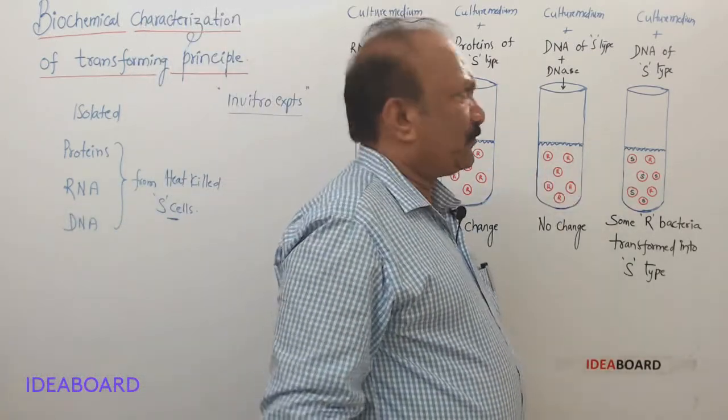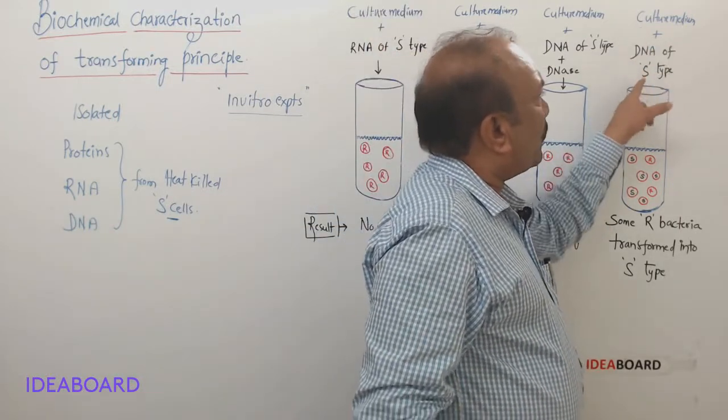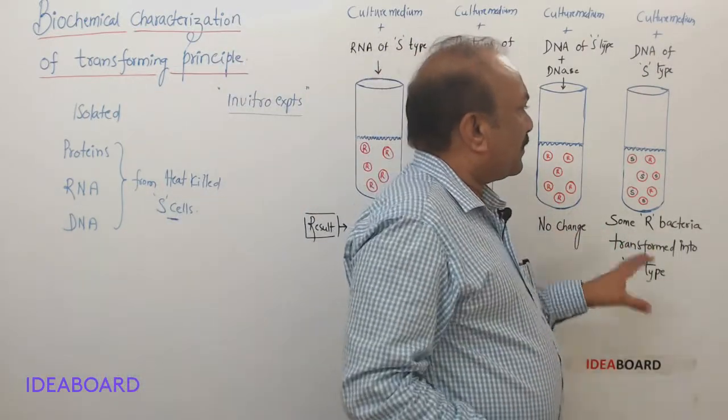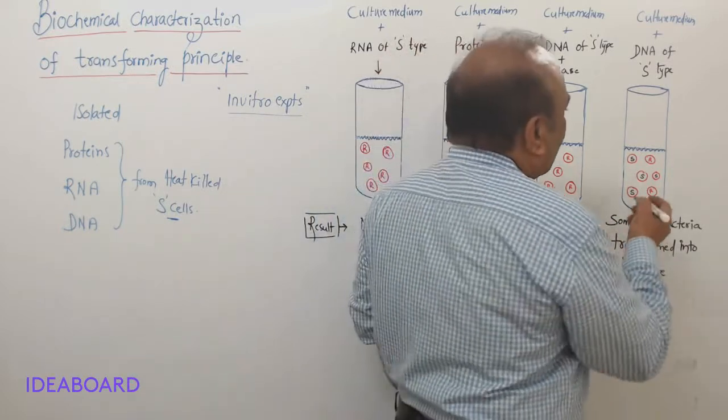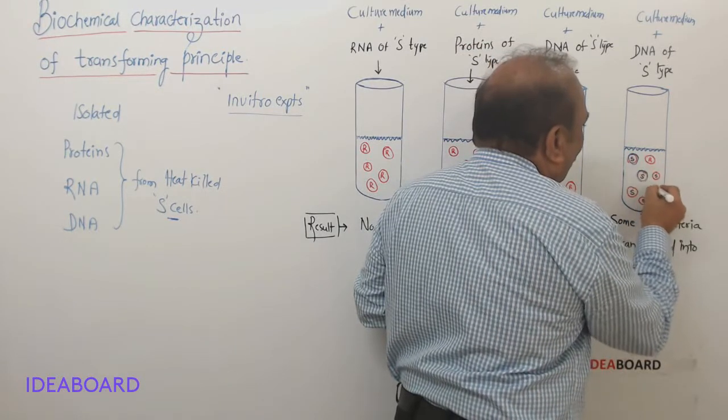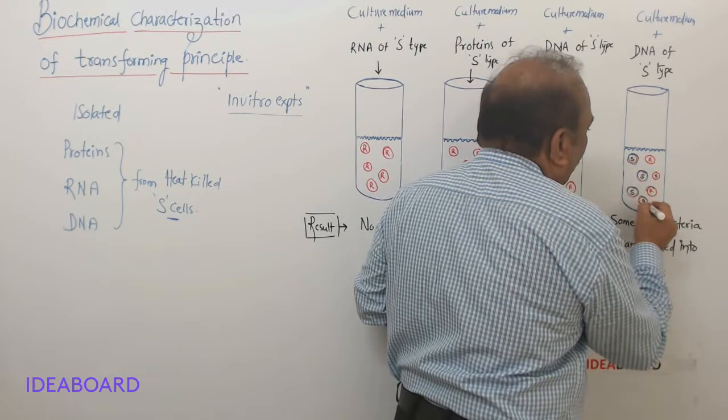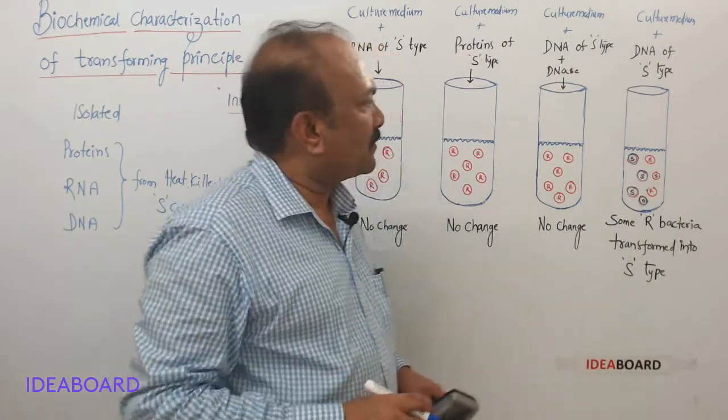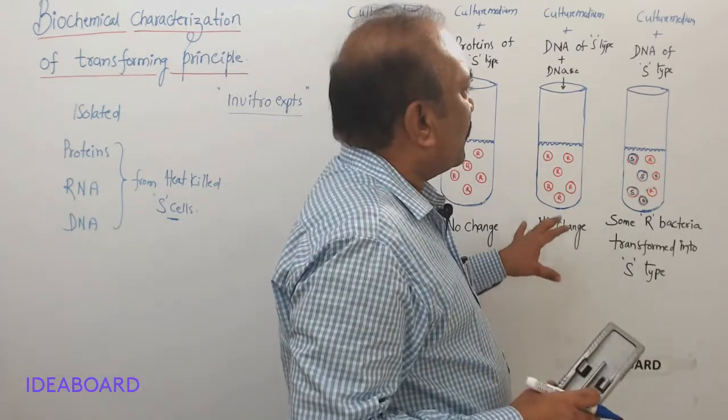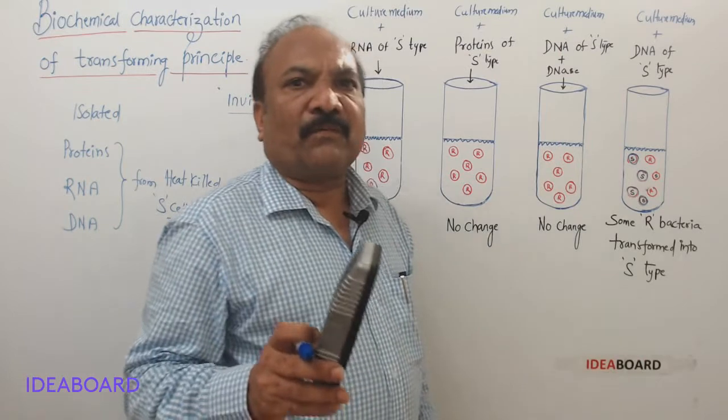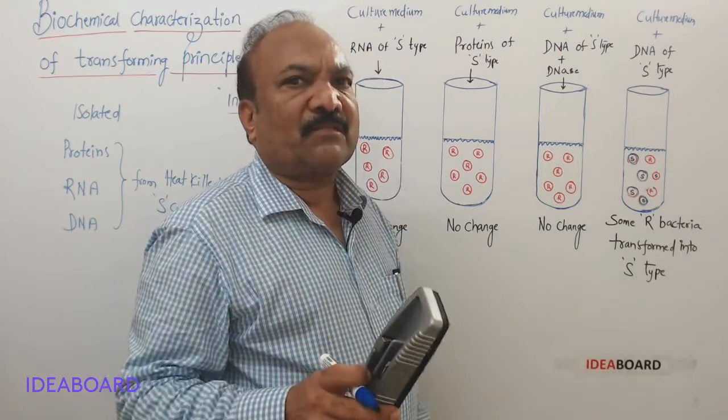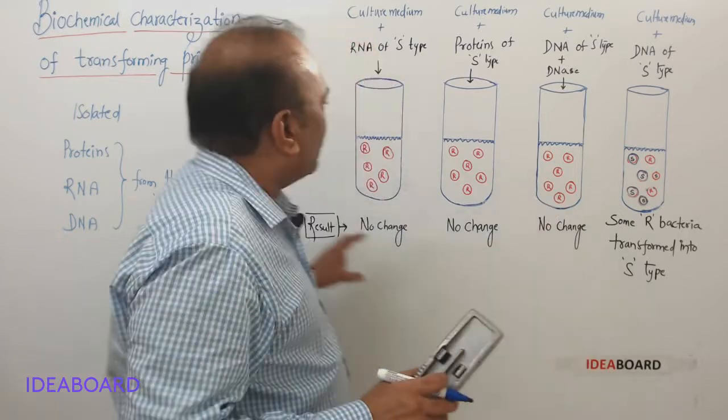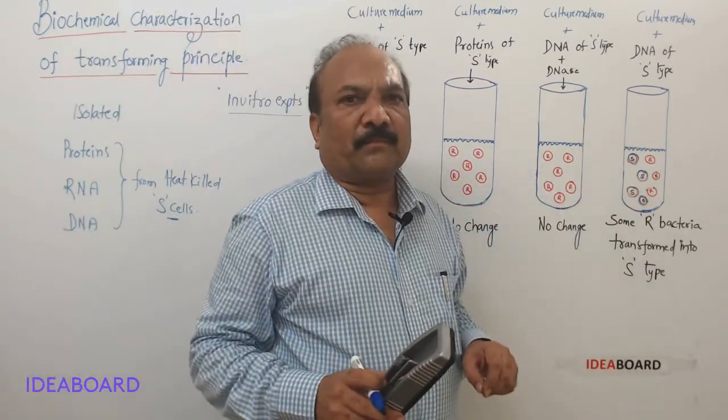Now let us see the fourth one. In the fourth one, they have added DNA of S type only. There is no enzyme now. And now what has happened? Some of these R cells have changed into S cells. So this indicates which is actually responsible for that transformation. These three people have confirmed the transforming principle by these experiments as DNA is the transforming principle.